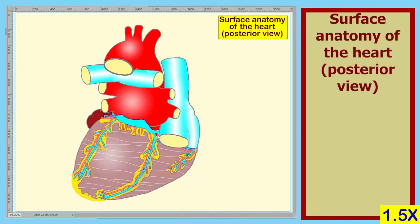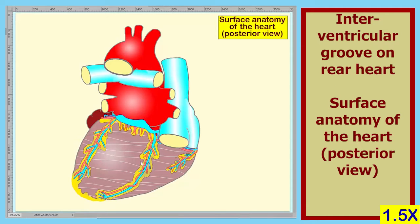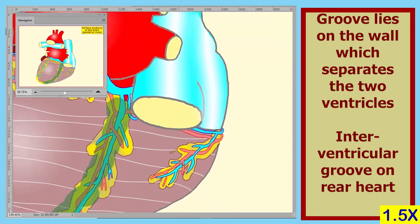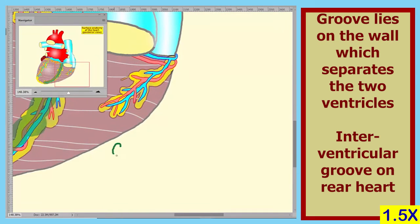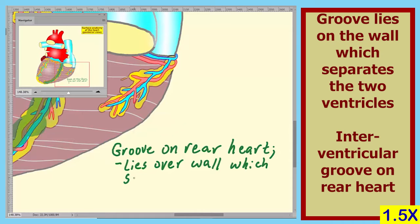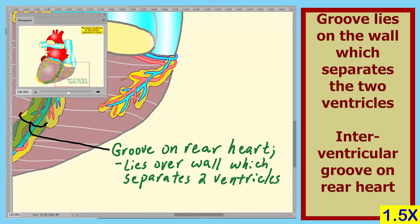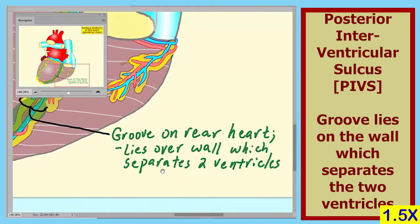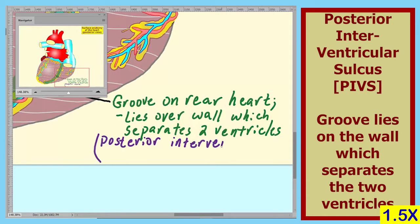Just as there was an intraventricular groove on the front of the heart, there's also one on the back of the heart. That groove is shown here. This groove lies over the wall which separates the two ventricles. Just as there was an anterior groove, there's also a posterior groove. This groove is known as the posterior intraventricular sulcus, and we will abbreviate this groove PIVS.